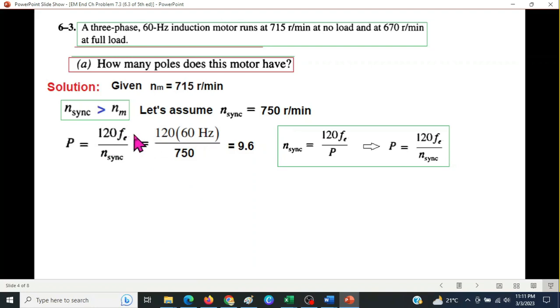Plugging in the values, Fe is 60 hertz frequency and n-sync we have assumed 750. So the number of poles is 9.6. Now the number of poles cannot be a fraction, it has to be a whole number. And also it has to be an even number, because poles are in even pairs.